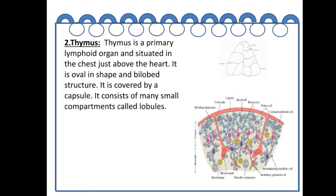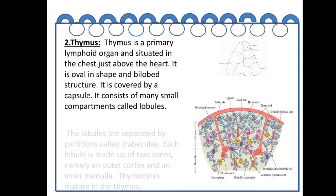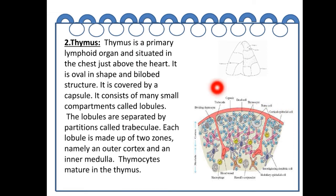The second primary lymphoid organ is the thymus. It is situated in the chest just above the heart. It is oval in shape with a bilobed structure, covered by a capsule, and consists of small compartments called lobules. The lobules are separated by trabeculae, and each lobule consists of two zones: the outer cortex and the inner medulla.